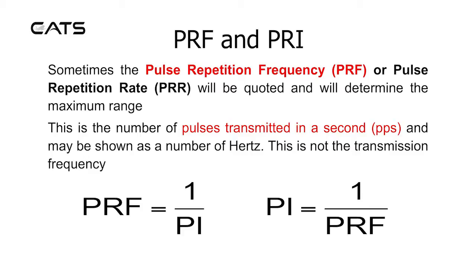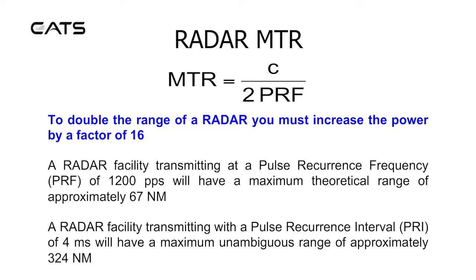Pulse repetition frequency is inversely related to pulse interval. The formula for maximum theoretical range for radar is C, the speed of light, divided by 2 multiplied by the pulse repetition frequency. To double the range of a radar, you must increase the power by a factor of 16. A radar facility transmitting a PRF of 1,200 pps will have a maximum theoretical range of approximately 67 nautical miles. A radar facility transmitting with a pulse recurrence interval of 4 milliseconds will have a maximum unambiguous range of approximately 324 nautical miles.